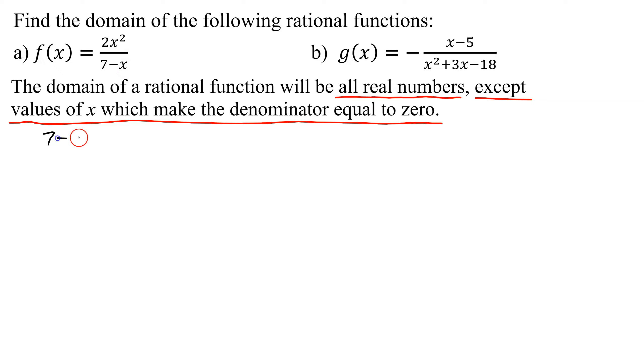We're going to set 7 minus x equal to 0, and if we add x to both sides, we get 7 equals x. That is the value of x that makes this denominator equal to 0.